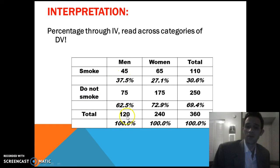Now, here we have our table, and we want to interpret it. It's already percentaged for you. So we have 37.5% of men smoke and 62.5% don't. 27% of women smoke and 72.9% don't. So again, here we just have two categories. So if we know those that smoke, we automatically know that the rest don't smoke. So you could focus on just one category and say 37.5% of men smoke compared to 27.1% of women. So a higher percentage of men are smokers.